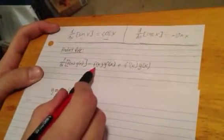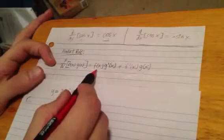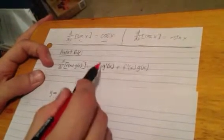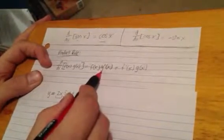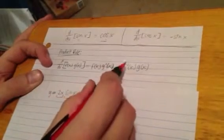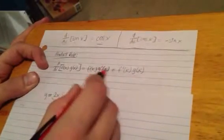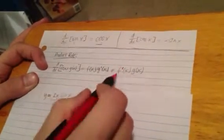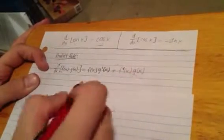So in order to find the derivative by using the product rule, you need to take f of x times the derivative of g of x, plus f prime of x—that's what that little sign right there means, by the way—f prime of x times g of x, and then add those two together.